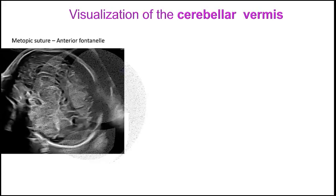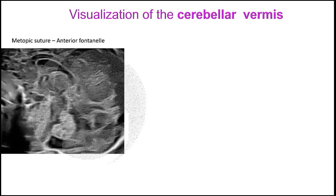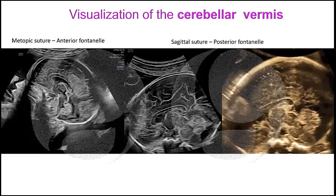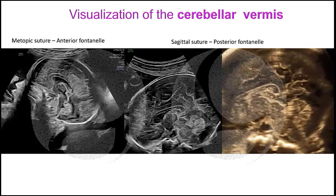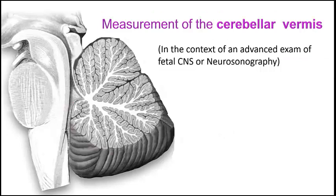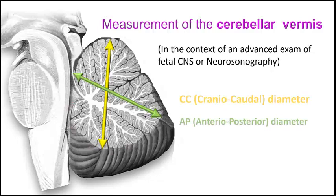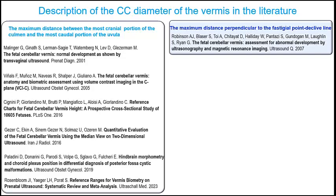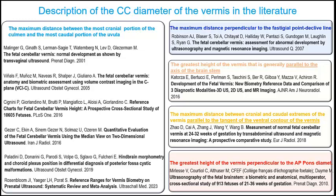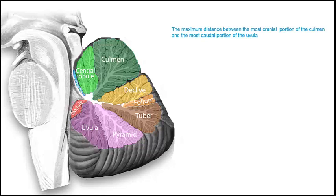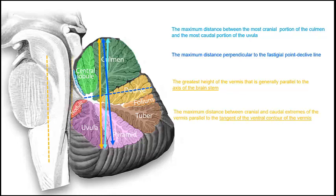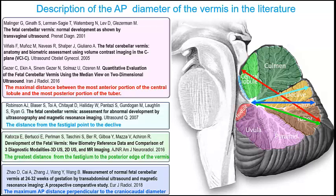To visualize the cerebellar vermis, we can use the insonation through the anterior fontanel, which will provide acceptable quality in many cases. But if we really need the best resolution, insonation through the posterior fontanel will give us much more detail. In neurosonography or advanced exam, we must measure the craniocaudal and anterior-posterior diameters of the cerebellar vermis. The problem is that, once again, there are different definitions of the craniocaudal diameter in the literature, although in daily practice there is probably no significant difference between all these definitions.